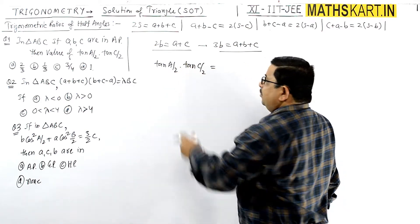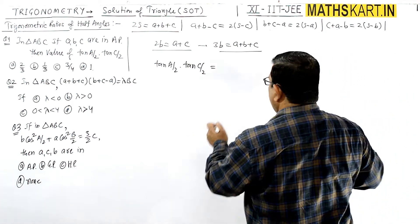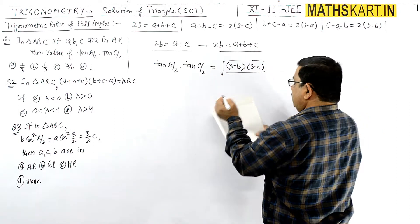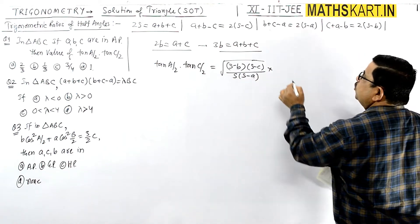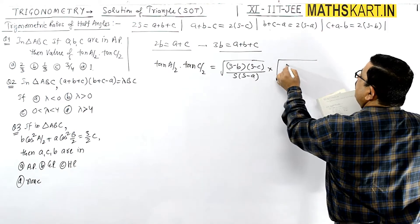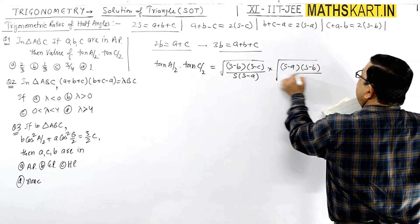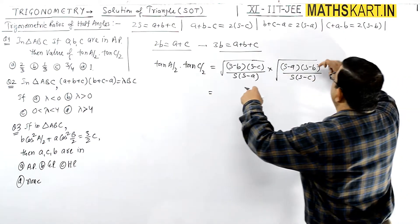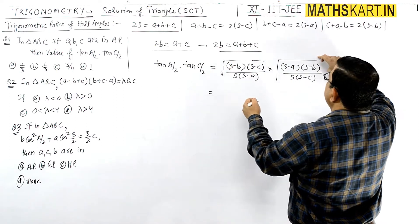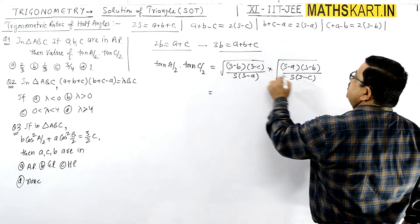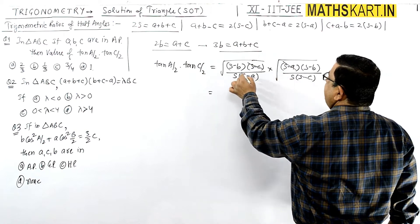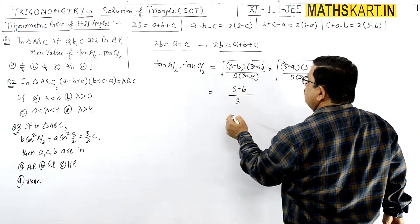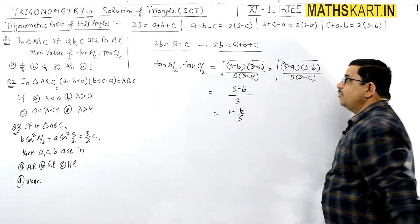After placing both formulas, we can see that (S-C) cancels and (S-A) cancels. We are left with (S-B) squared inside the root divided by S squared. So (S-B) comes outside and we get the result as (S-B)/S, which can be written as 1 - B/S.